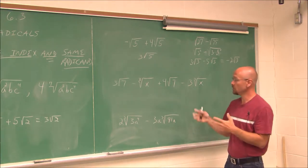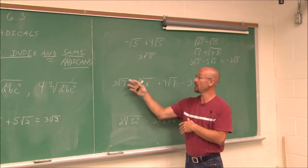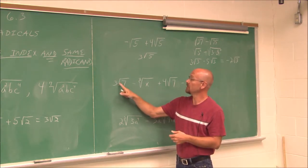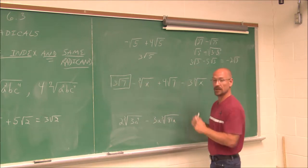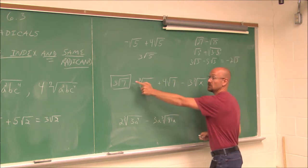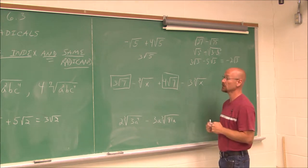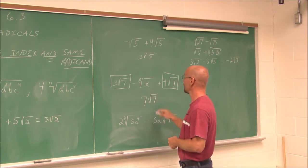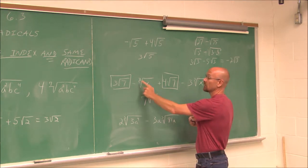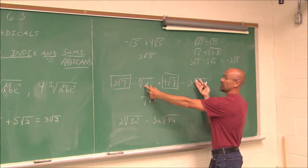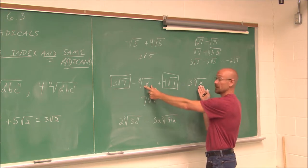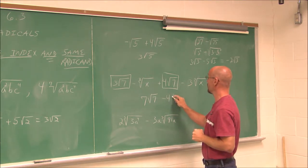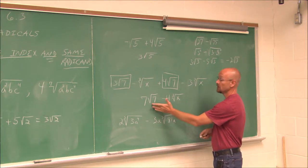What if we have something of this nature? We can see that the radicands are different and the indexes are different as well, but we have to consider all the terms. I have 3 square roots of 7 and I see 4 square roots of 7 — these two terms have the same index and the same radicand, they are like terms. So 3 of them plus 4 of them gives 7 square roots of 7. The other two terms both have an index of 3 and a radicand of x, so they are like radicals. Combining negative 1 and negative 3 gives negative 4 cubed roots of x. We've simplified from four terms down to two.